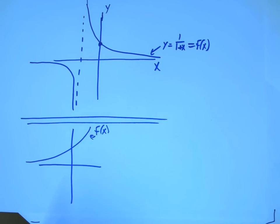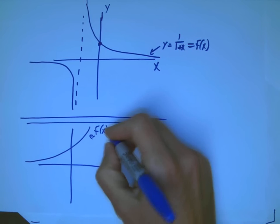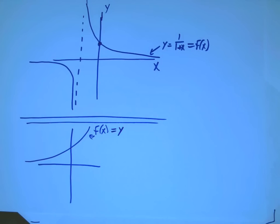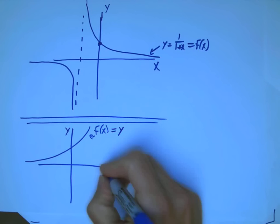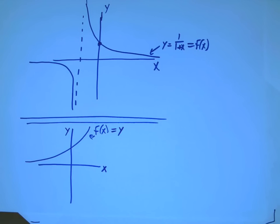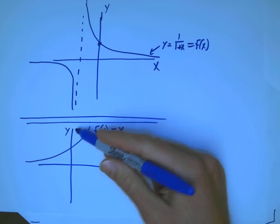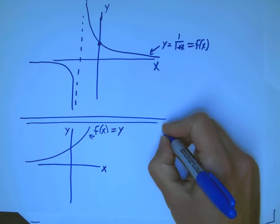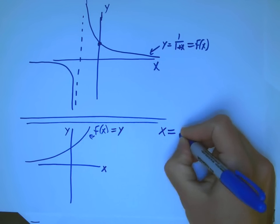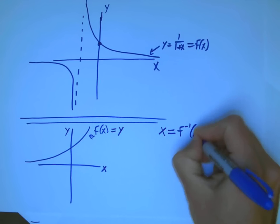If I just look at a function like this, here's the graph. So y equals f of x, how would I graph the inverse function? Well, if I look at what happened, there were two things that I did in the algebra. One was I solved for x in terms of y.